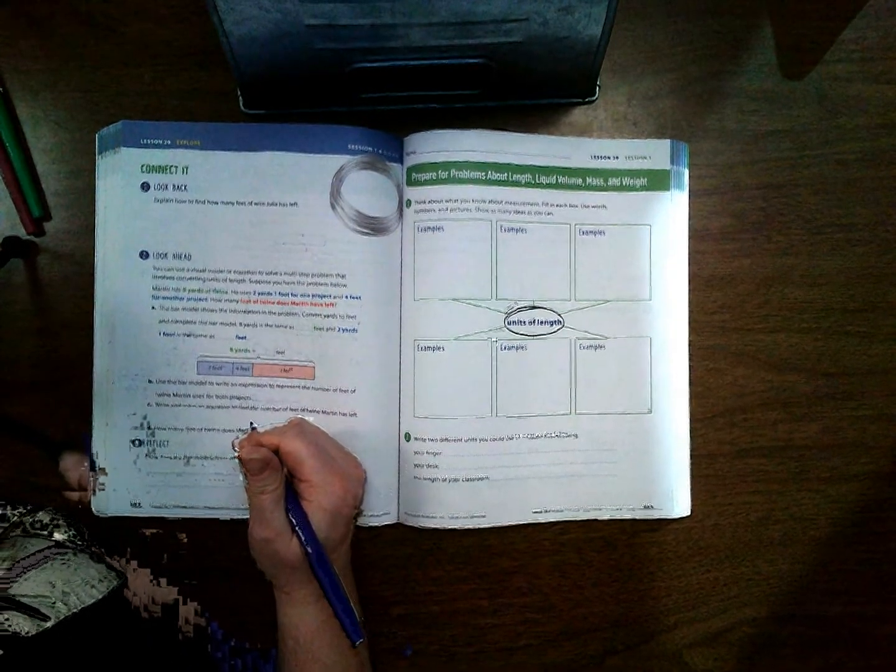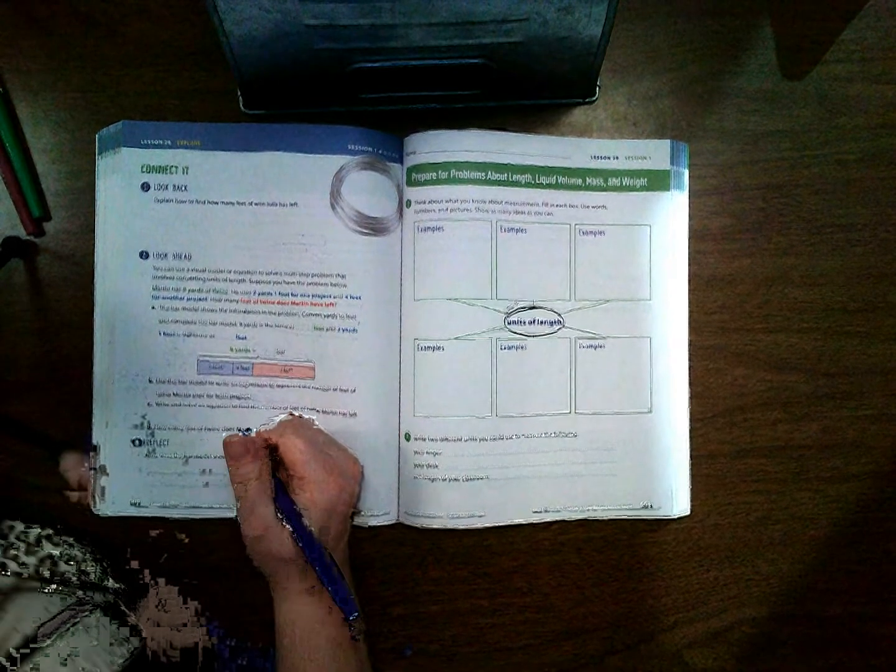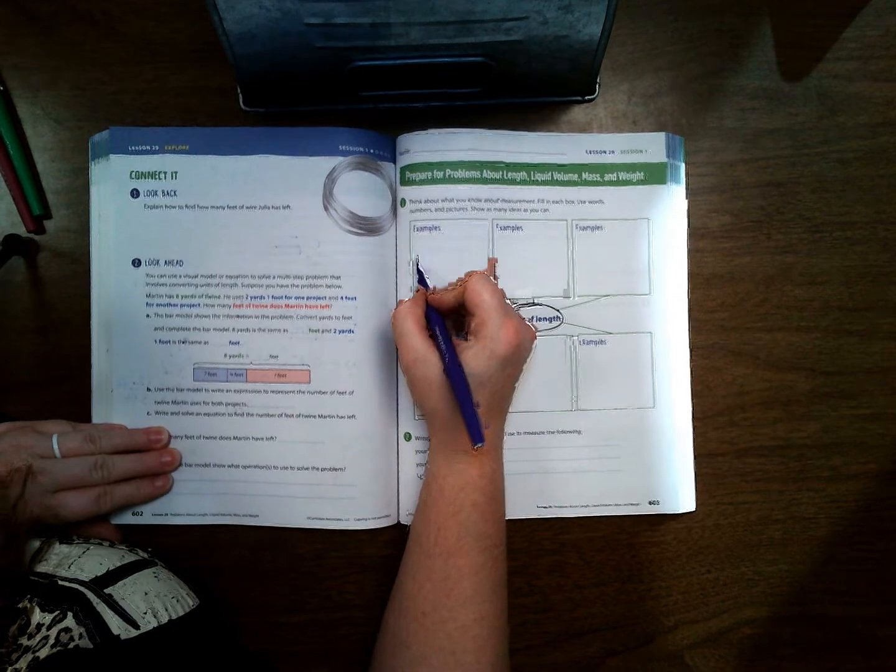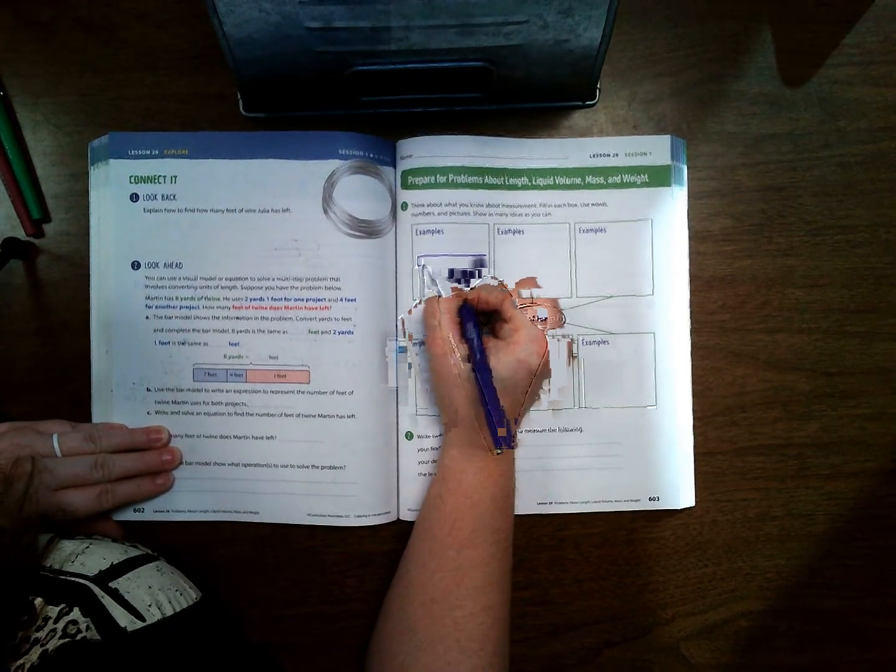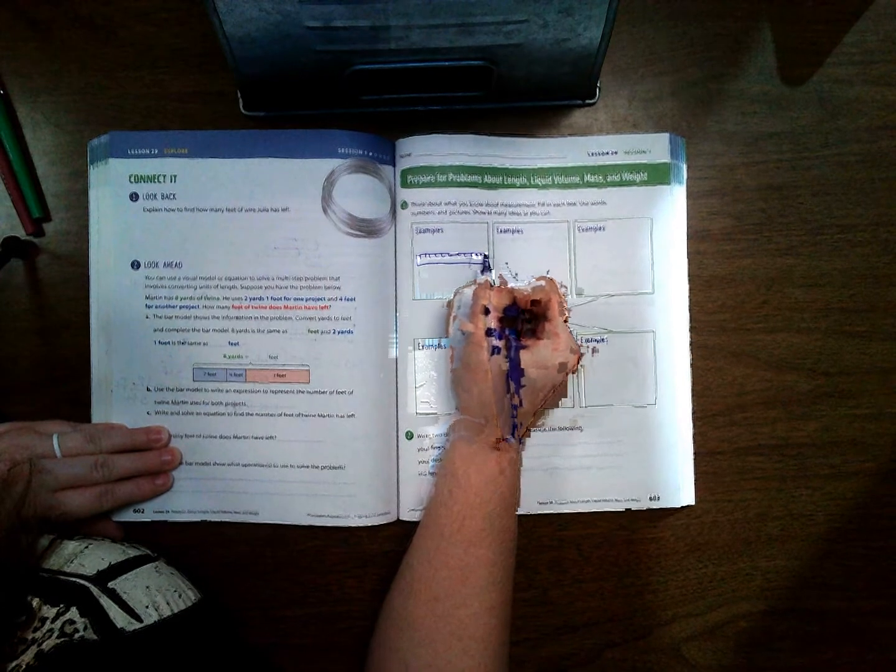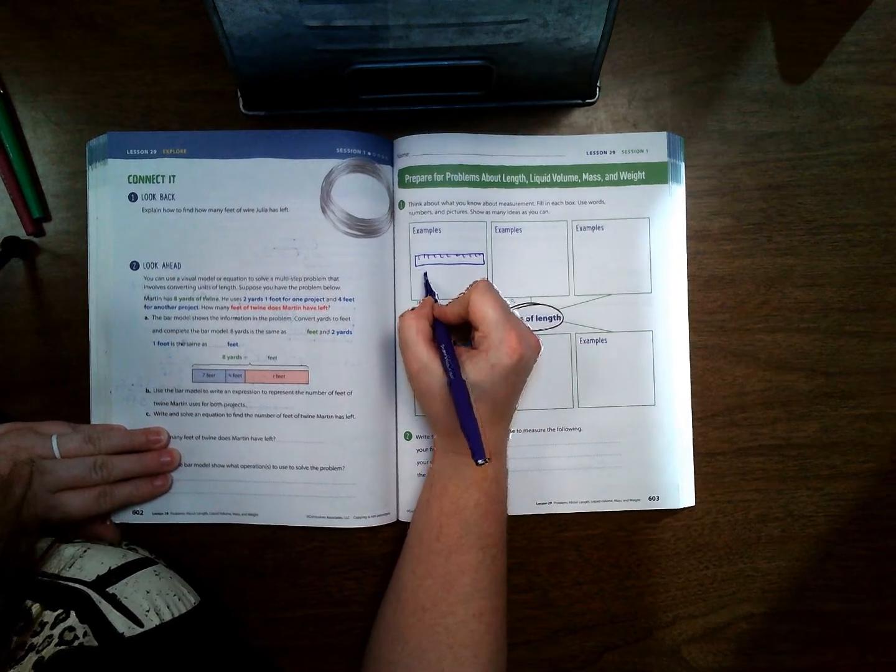So we were working with time, now we're skipping over to length. And length is something that a lot of students struggle with. So ways that we can talk about length, we can use a ruler, and a ruler usually is measured in inches and it usually is one foot.